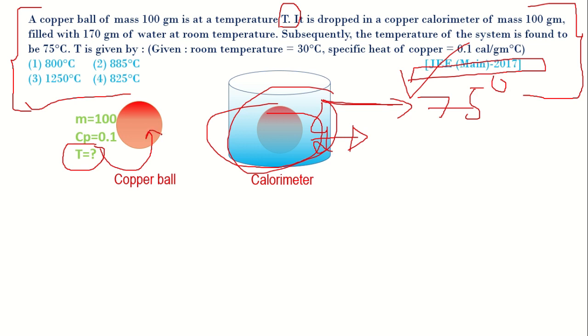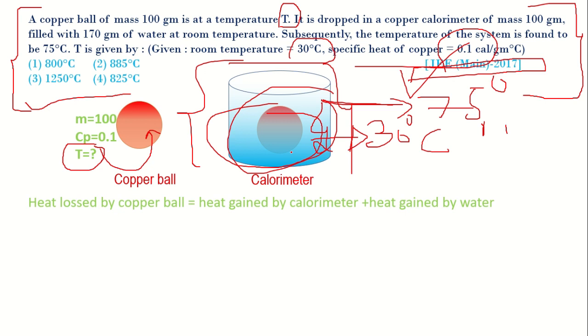Given that room temperature is 30 degrees Celsius and specific heat of copper is also given that is 0.1 cal/(gm°C). If you look at the total system, heat lost by copper ball is equals to heat gained by calorimeter and heat gained by this water.